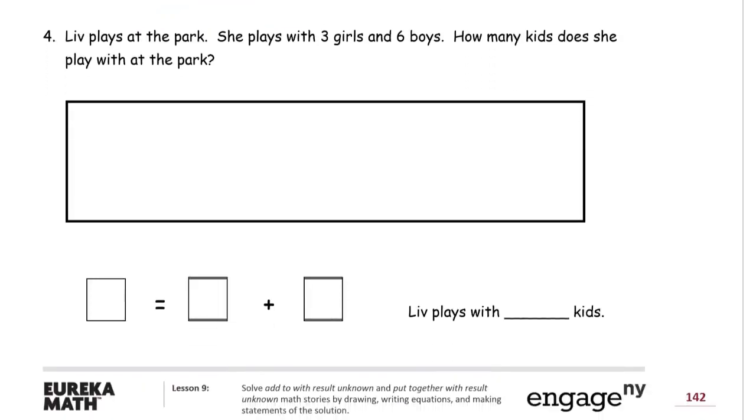And here's our last one. Liv plays at the park. She plays with three girls and six boys. How many kids does she play with at the park? So there's the R, we just read it. And she's playing with all three girls and six boys. And we're only counting the kids that she plays with. So we're not counting Liv. So we have, we're going to read it. We just read it. Now we're going to draw a picture. And then we'll write our answers later. R, D, W. All word problems.